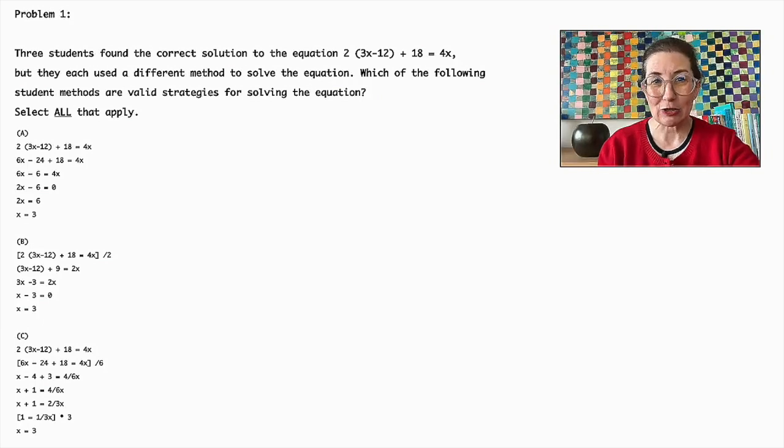Let's look at the correct methods. Option A correctly expands and simplifies the equation step by step by distributing 2 over (3x - 12), combining like terms, and isolating the variable term.